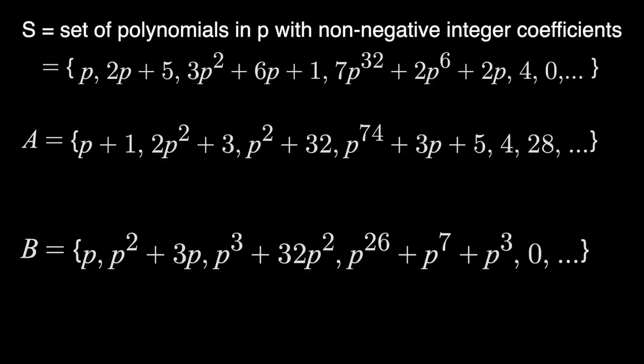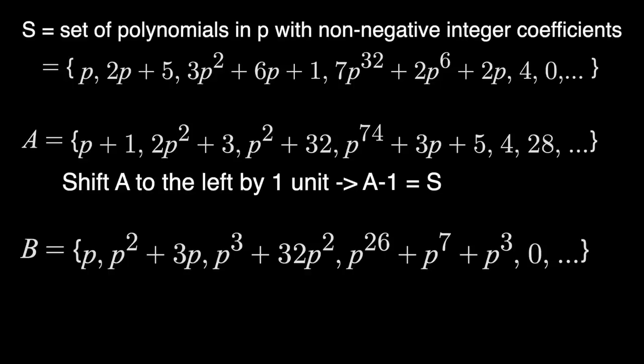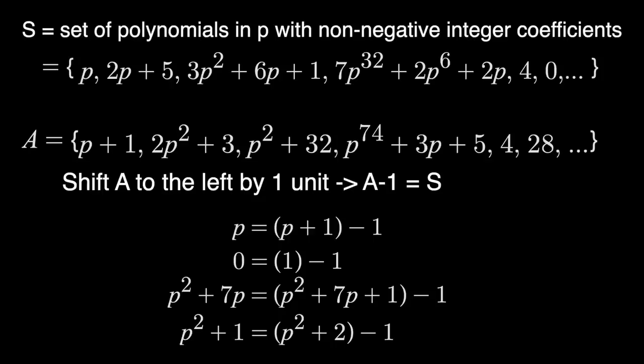So now we're going to take set A, which is just a bunch of points, and shift it to the left by one, like before, which means just subtracting one from every element. And when we do this, we get S, the entire original set back. That may take a second to see, but just think how any element in S, whether it has that constant term or not, can come from something in A, something with that constant term, subtracted by one. See, since all the constant terms in A are positive integers, then by subtracting one, you'll still be left with something valid that is in S.